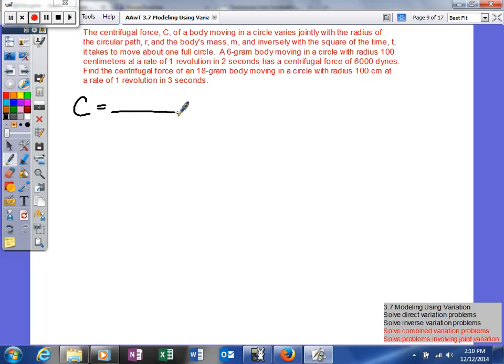It says the centrifugal force varies jointly. Joint variation means both of these are going to be multiplied together in the numerator - our radius R and our body's mass M. And inversely with the square of time, so we'll put T down here and square it. And all of these problems will have a K in our numerator.